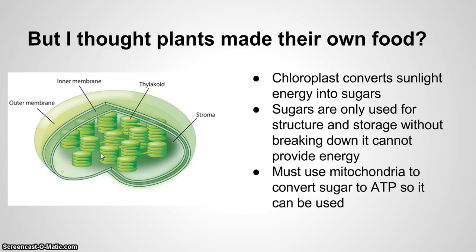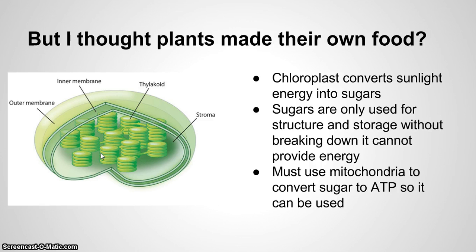You might think that plants make their own food — and that's right. They are using photosynthesis to create their own sugars. Chloroplasts in the cell convert sunlight into sugars. Sugars are only used for structure and storage; without breaking down, they cannot provide energy. So that sugar is not going to do anything if it doesn't break down. It's going to go back to the mitochondria to convert it to ATP. ATP is our only usable form of energy, even within plants. Plants do make their own food; they just cannot use that sugar without having ATP.